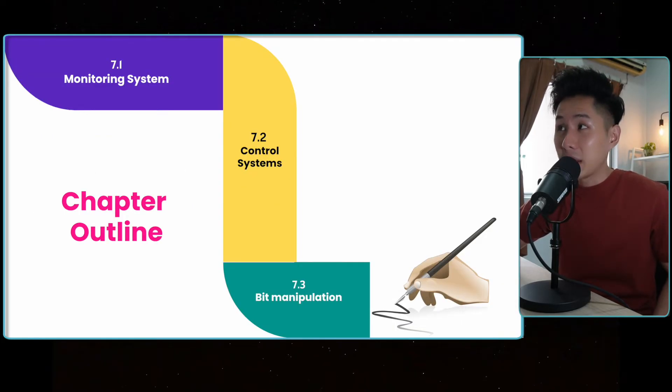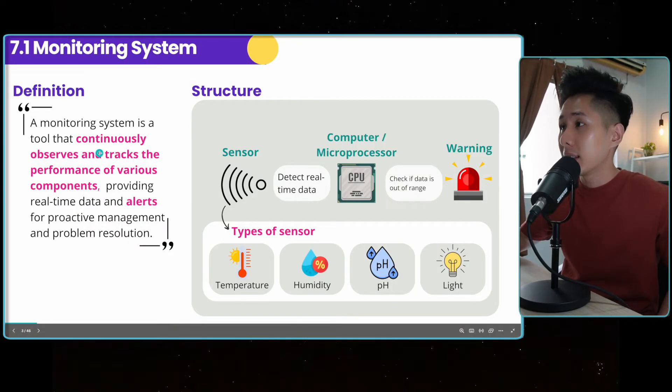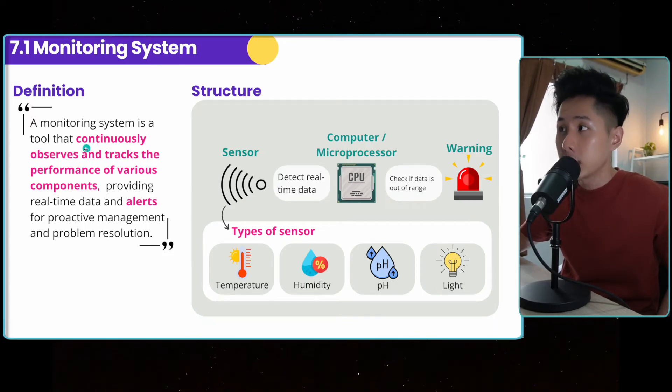So this is the chapter outline. Let's look into what a monitoring system does. It's a tool that continuously observes and tracks the performance of various components. The keyword is continuously, it keeps doing it. Providing real-time data and alerts for proactive management and problem resolution.